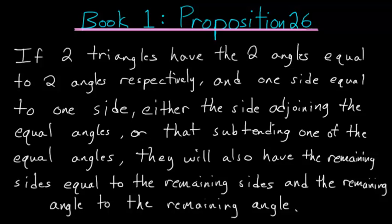For the second part of Book 1, Proposition 26, we still want to consider two triangles that have two equal angles. But now when considering the sides that are equal between the two triangles, we no longer want to consider the side to be between the two angles, but now the side will be subtended by one of the equal angles.